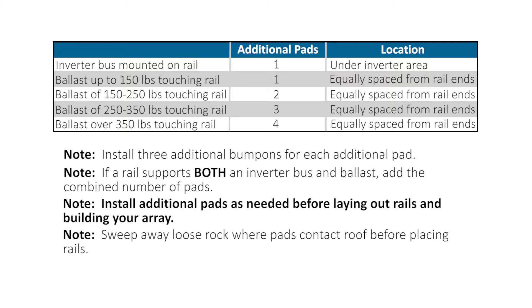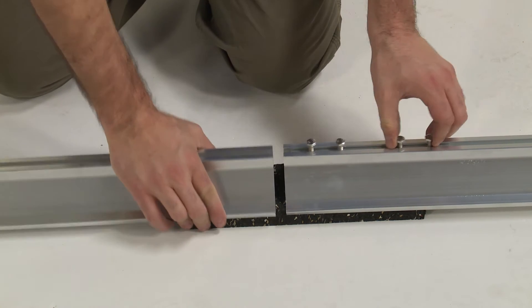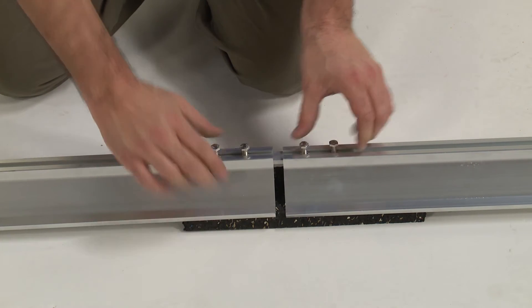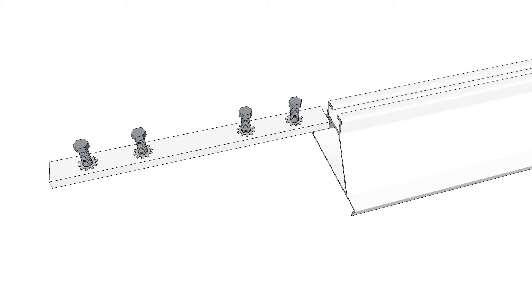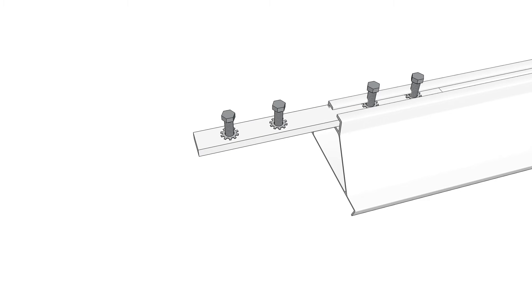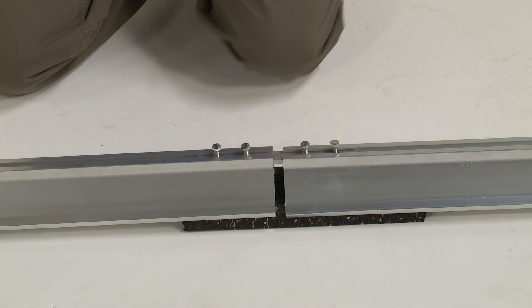Sweep away loose rock where the pads contact the roof before placing rails. Begin laying out the rails. Connect a short rail to a long rail with a pre-assembled rail connector. Slide the rail connector into the slot of one of the rails, making sure the star washers are inside the slot to ensure proper grounding.